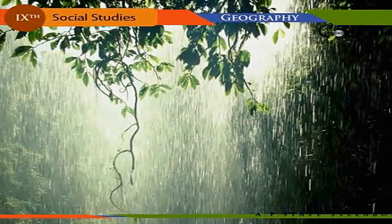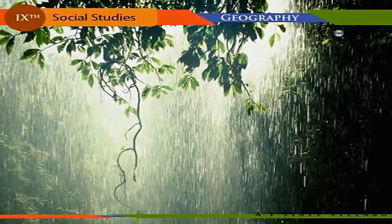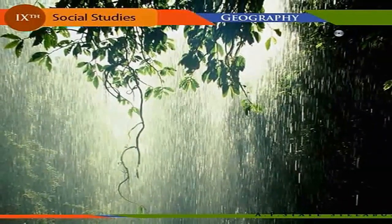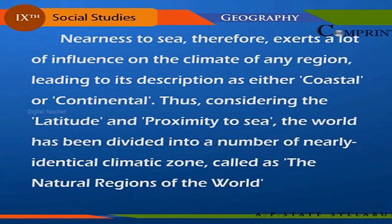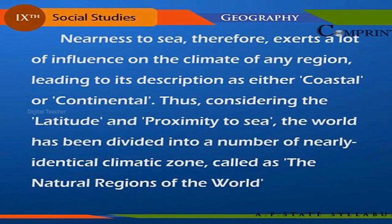Temperature, rainfall, and soil play a critical role in the distribution of natural vegetation. Nearness of the sea therefore exerts a lot of influence on the climate of any region, leading to its description as either coastal or continental. Thus, considering the latitude and proximity to sea, the world has been divided into a number of nearly identical climatic zones, called the natural regions of the world.